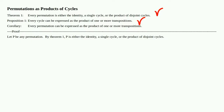Let p be any permutation. By Theorem 1, p is either the identity, a single cycle, or the product of disjoint cycles. Let's consider those cases.